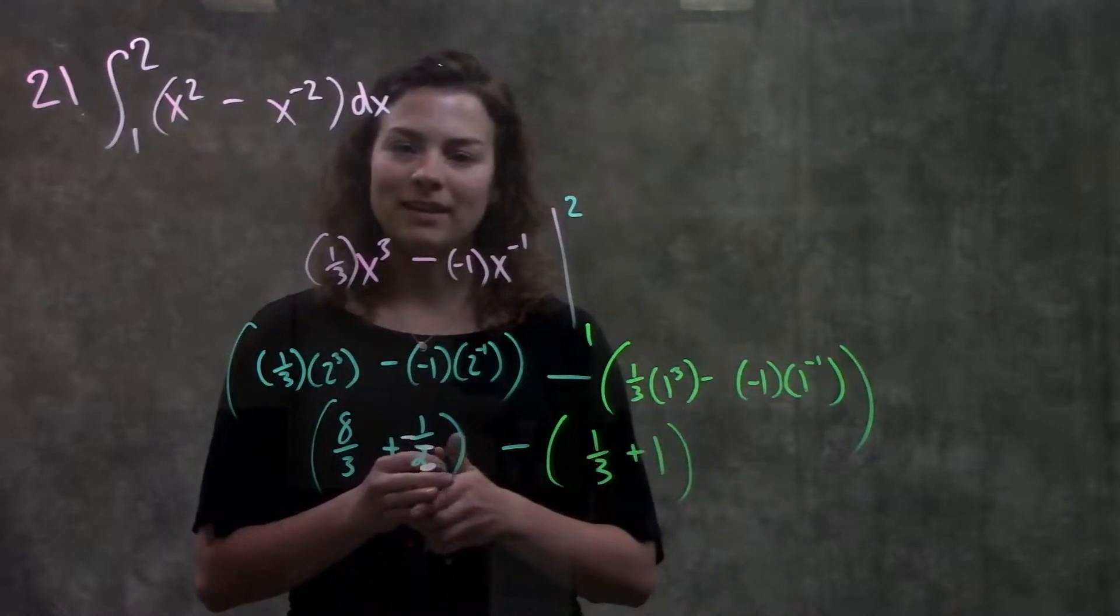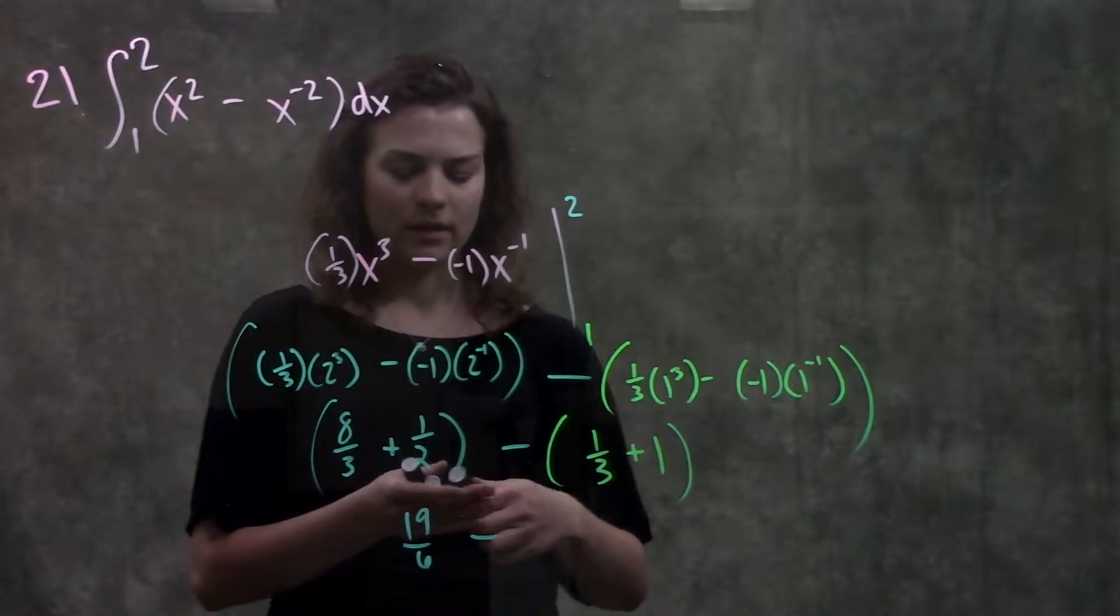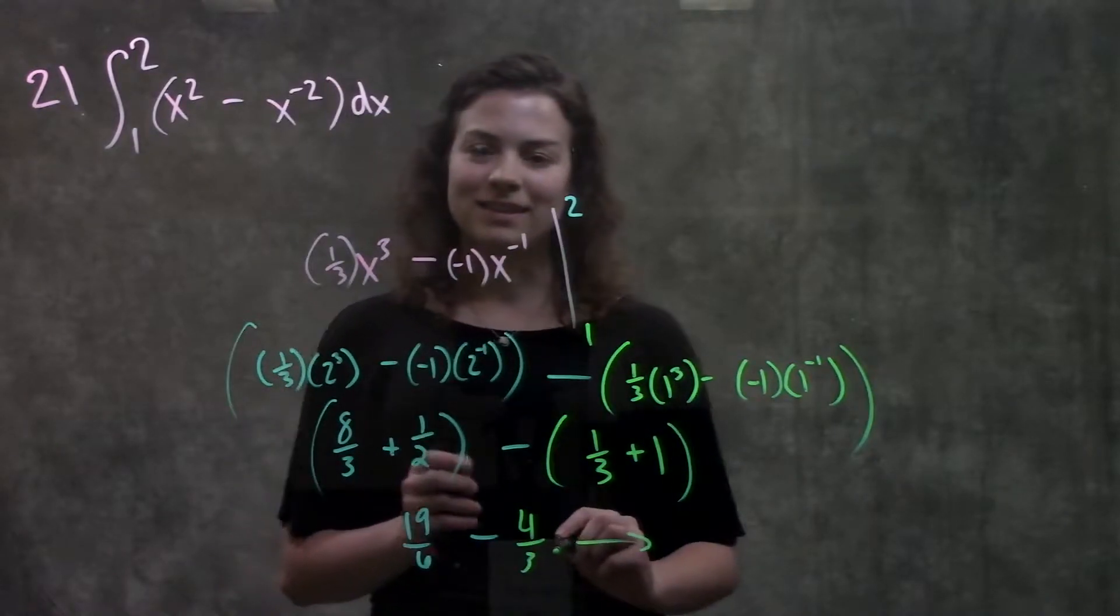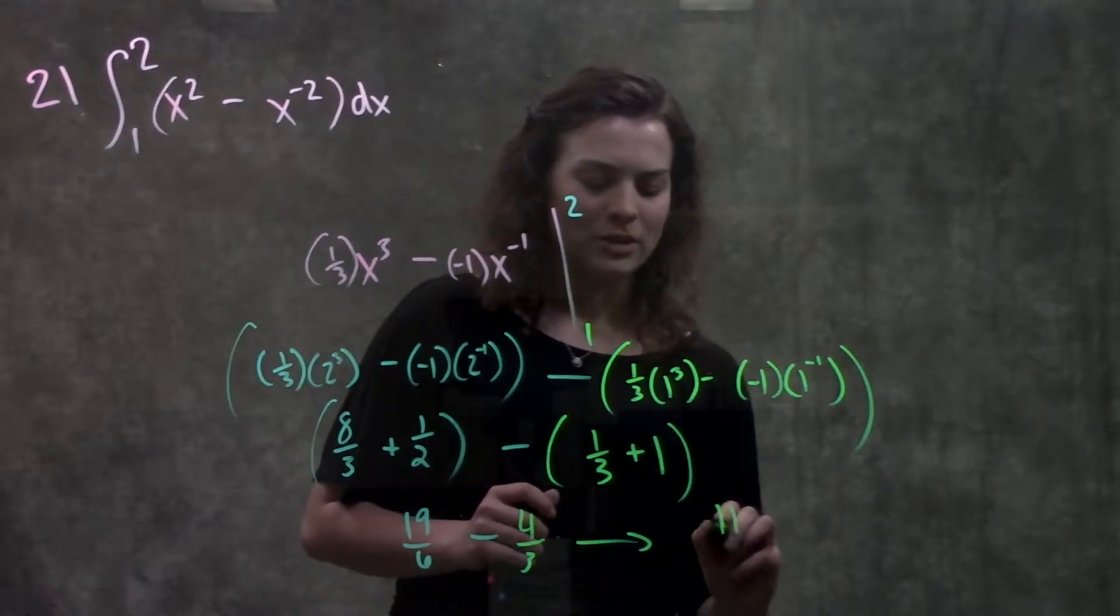And then adding these things together over here, this will become 19 over 6 minus, this side becomes 4 over 3. And then combining these things, 19 over 6 minus 4 over 3 will come out to 11 over 6.